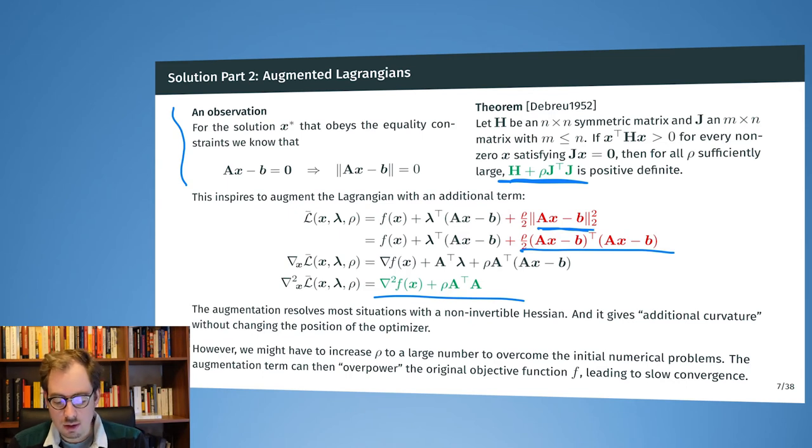And now when we compute the first and the second derivative of this term, we will end up with the Hessian of the original objective function plus rho A transposed times A. And this looks kind of similar to this guy up here from which it was shown that it has to be positive definite. And we also know because of the left-hand observation that we have not moved the position of the optimizer. Because in the optimum, so here when we let x go to x star, we know that this red term here, it will be exactly zero. So in the optimum, or in all the solutions where the equality constraint holds, here this term will be exactly zero. But what we get from this term is additional curvature in the Hessian.